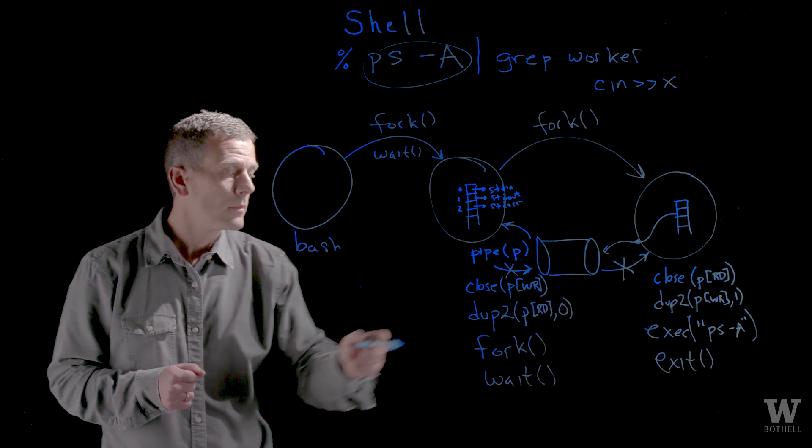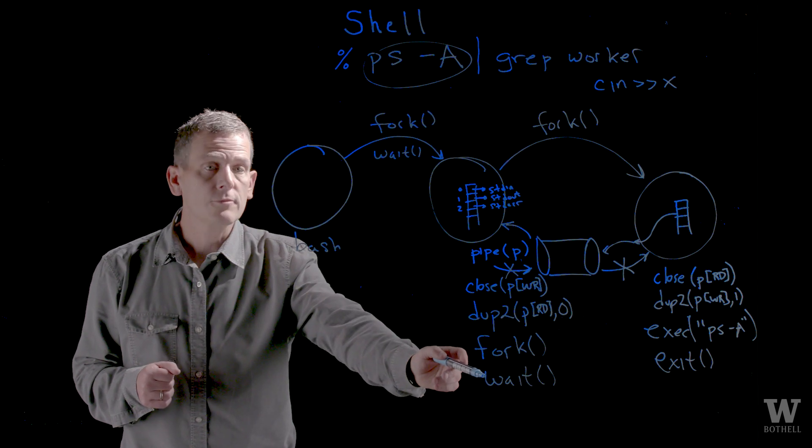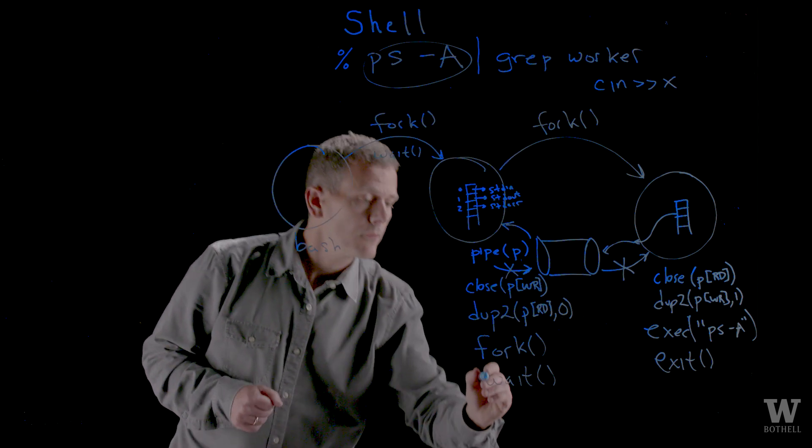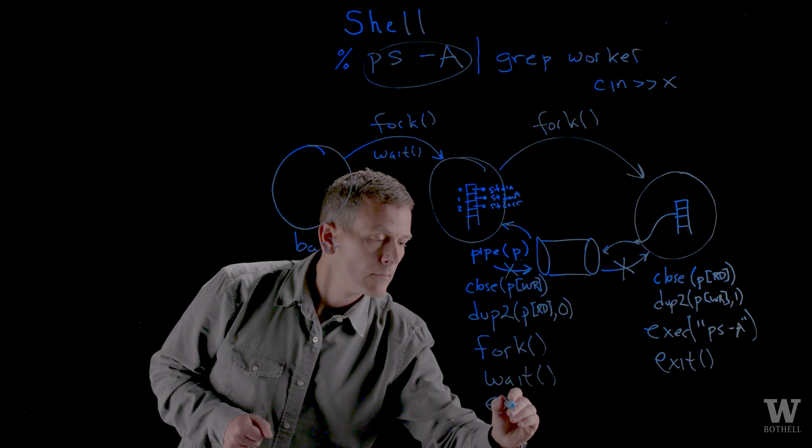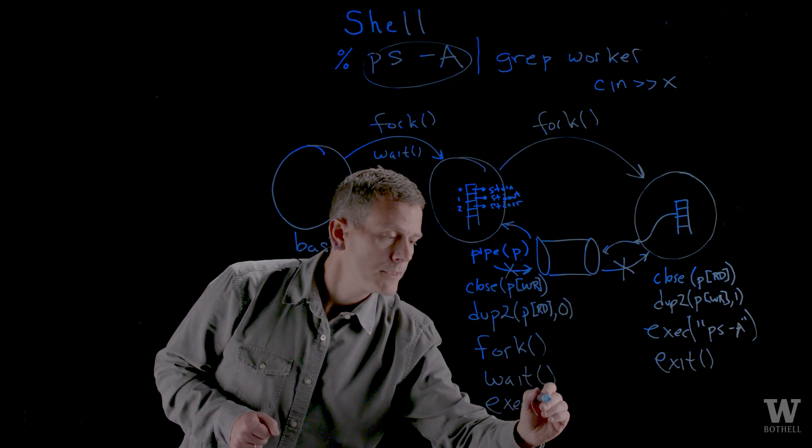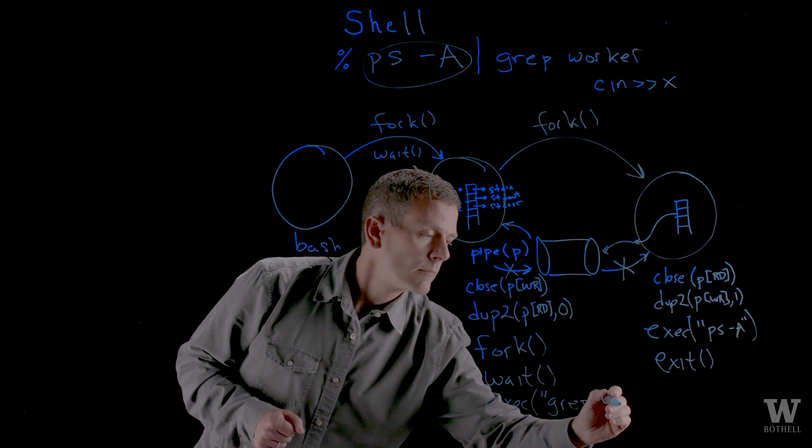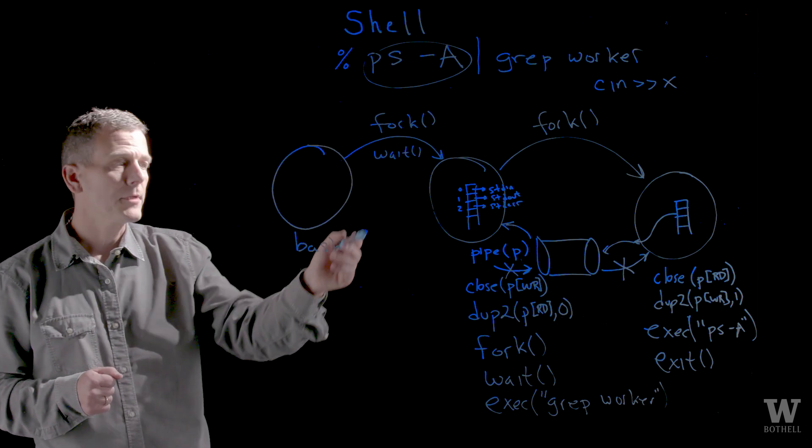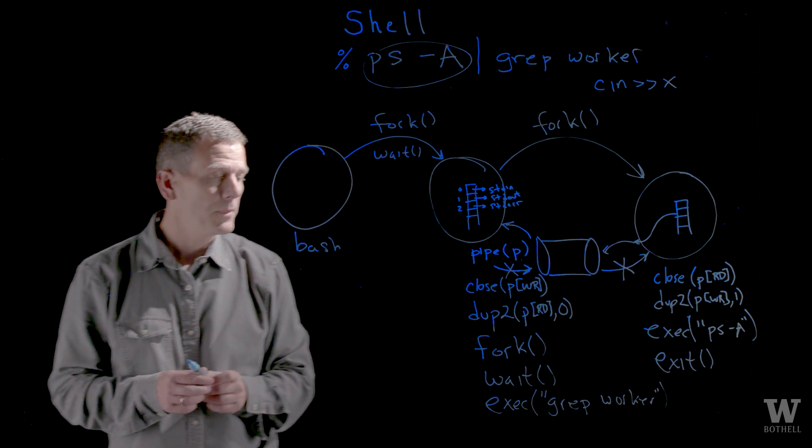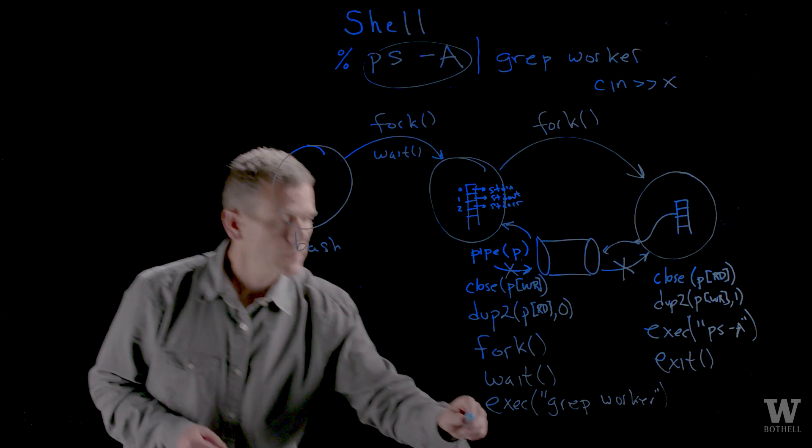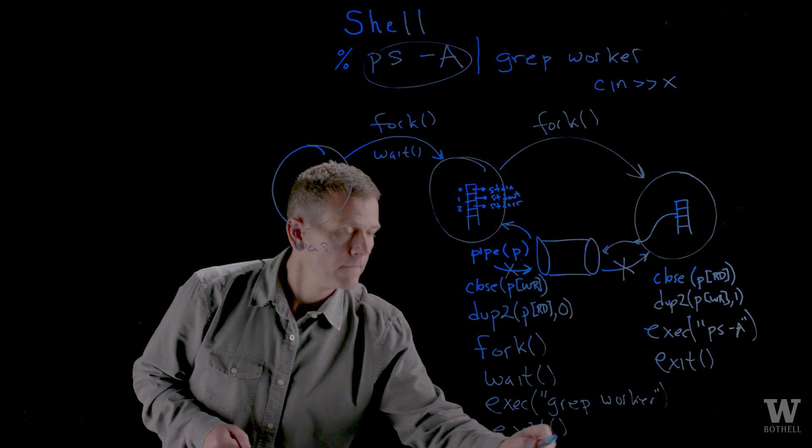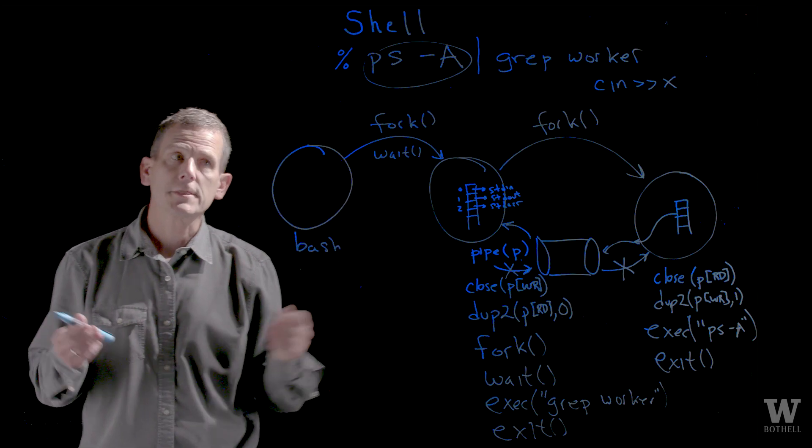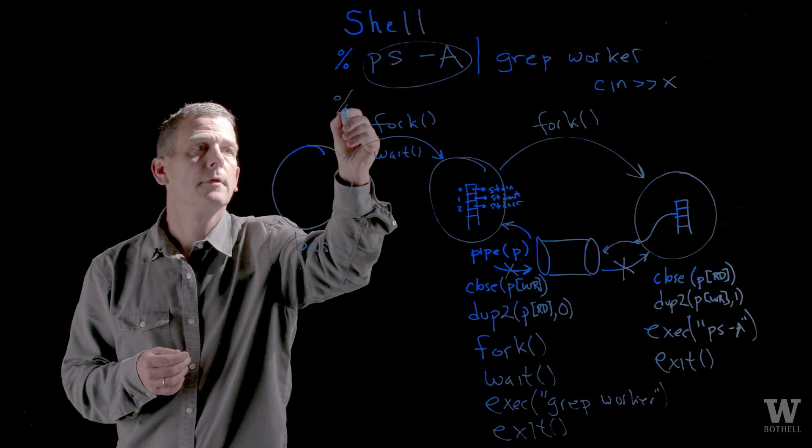At this point, this parent returns from the wait because its child has exited. I can now run my grep in this process. And it will take as its standard in what was in the pipe from the PS. When this finishes, this process exits. And the bash shell, which was waiting, starts waiting again and asks for the next command.